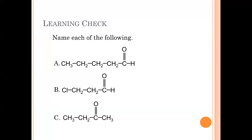Let's name some compounds. Example A is an aldehyde: longest chain is one, two, three, four, five carbons — pentane, drop the E, add AL — pentanal. Example B: don't get confused by the Cl. The longest chain is one, two, three — propane, drop E, add AL — propanal. The aldehyde carbon is always carbon one, so the Cl is at carbon three: 3-chloropropanal.